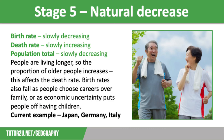Finally, we have Stage 5, which is natural decrease. Here, the birth rate is slowly decreasing while the death rate is slowly increasing, resulting in a slight drop in population. People are living much longer due to improvements in healthcare and diet, but this increase in the population of older people results in an increase in the death rate. The birth rate is even lower at this stage because people have chosen to put their careers before having a family, but also periods of economic uncertainty may put people off having children temporarily.